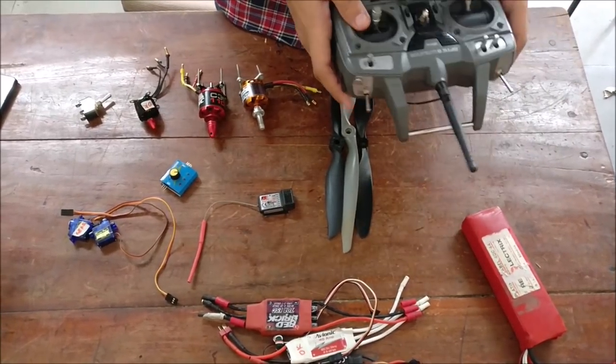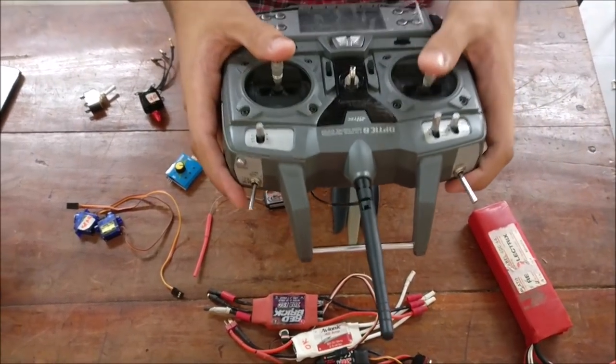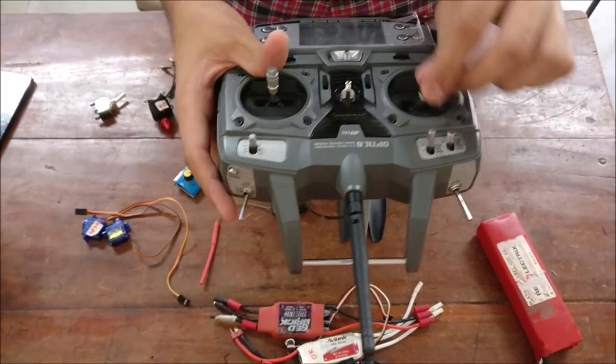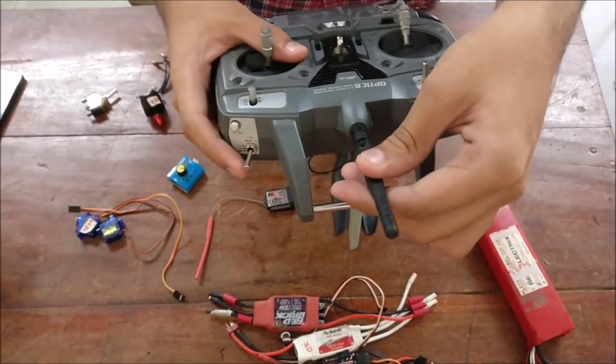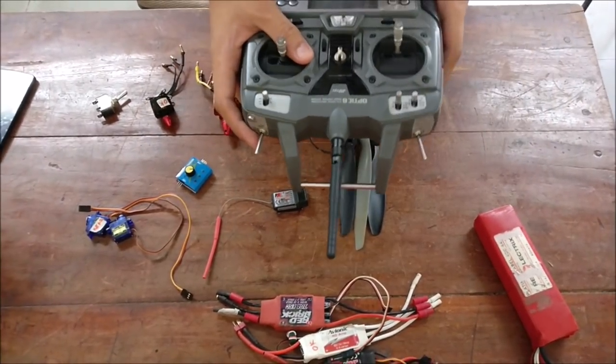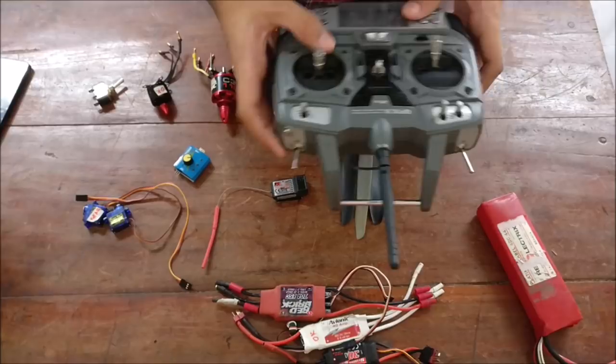And lastly this is a transmitter having throttle and rudder and pitch having auxiliary switches too. And this is the antenna. And there are various functions which will be discussed later.